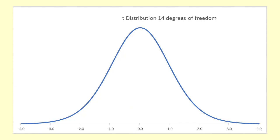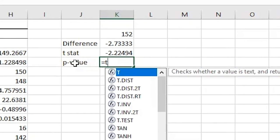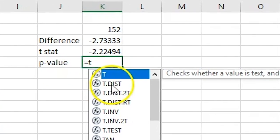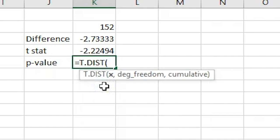That is saying that the sample mean is a bit more than two standard errors below the hypothesized mean. The t-distribution is pretty similar to the normal distribution, so we know that anything more than two standard errors away from the mean is a little unusual. We find out what is the probability of getting a value of negative 2.22494 or less in the t-distribution with 14 degrees of freedom.